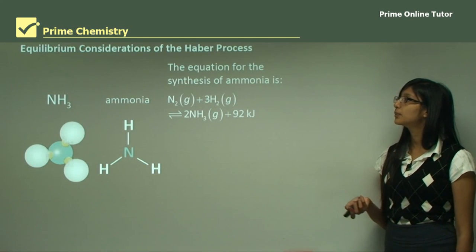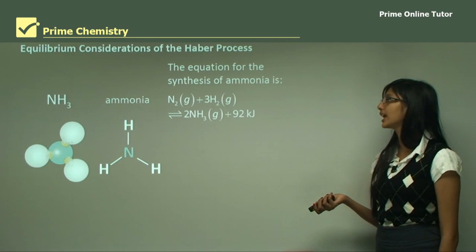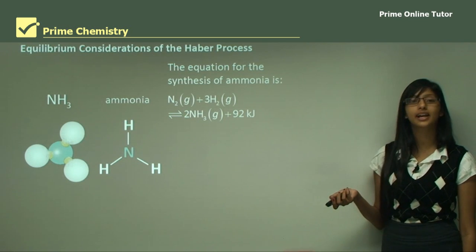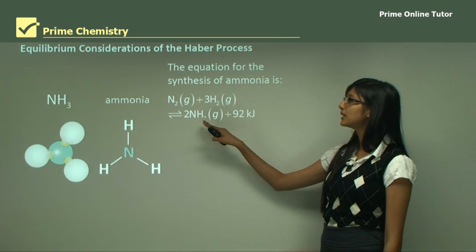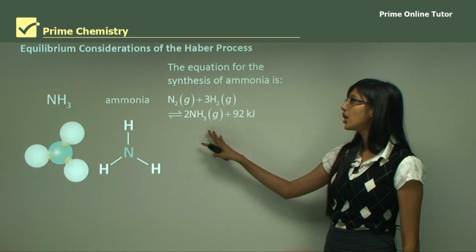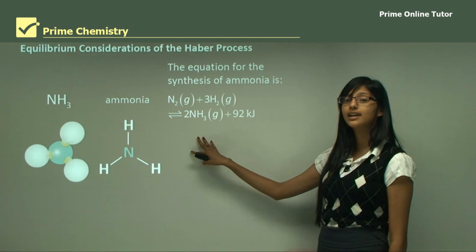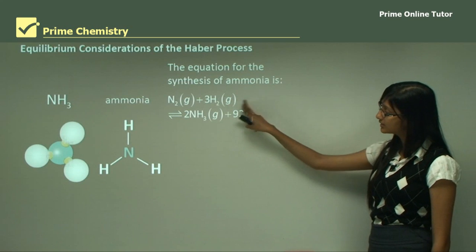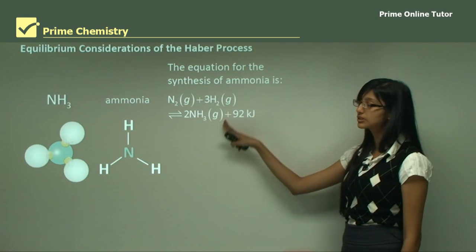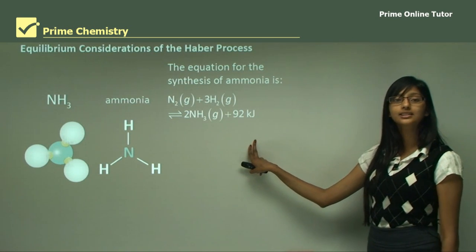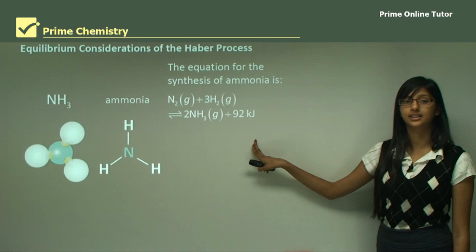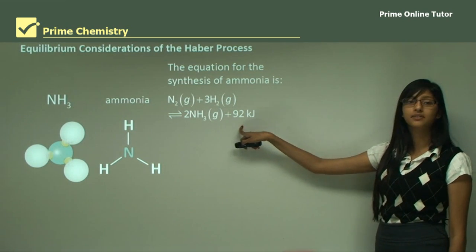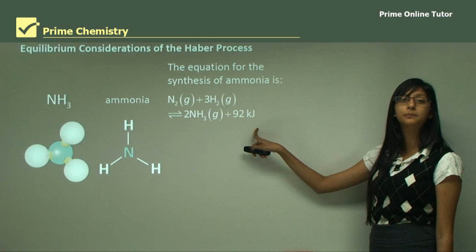The equation for the synthesis of ammonia is: nitrogen plus three molecules of hydrogen forms two molecules of ammonia, plus 92 kilojoules of energy. This 92 kilojoules of energy tells us that it is an exothermic process — energy is produced at the end of the reaction, and this will have some effect on the equilibrium position.